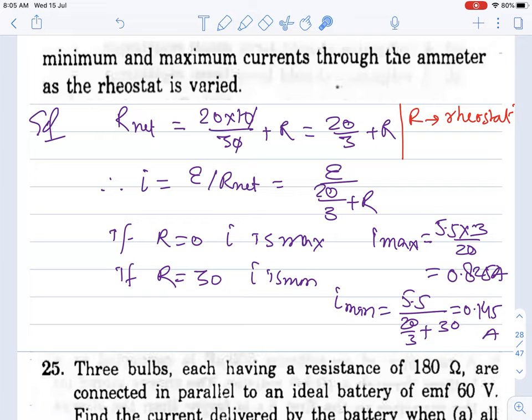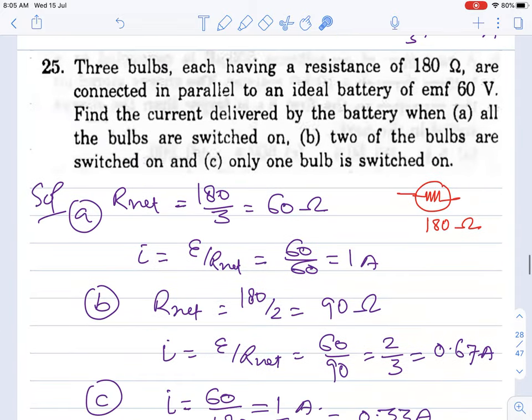Next question: Three bulbs, each having resistance 180 ohms, are connected in parallel to a battery of EMF 60V. Find the current delivered by the battery when all three are switched on.